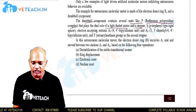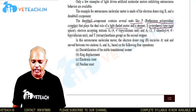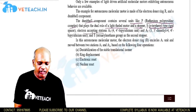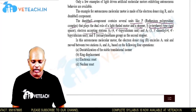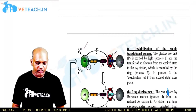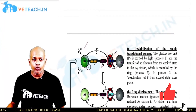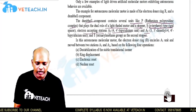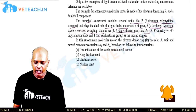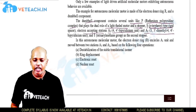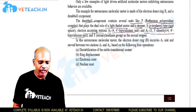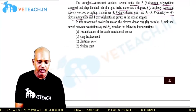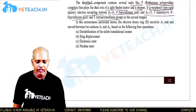S is a rigid spacer — specifically a para-terphenyl-type rigid spacer. We have two electron-accepting stations: A1, which is the 4,4'-bipyridine unit, and A2, which is the 3,3'-dimethyl-4,4'-bipyridine unit. T is a second stopper — the tetra aryl methane group.